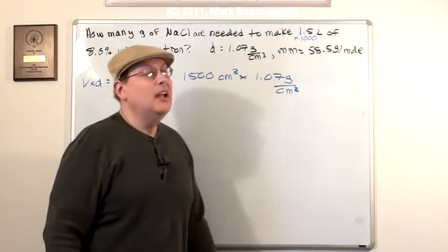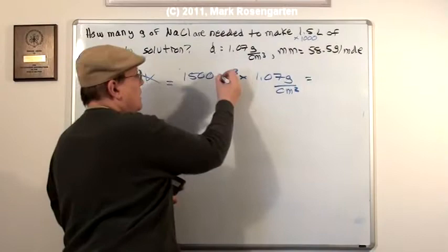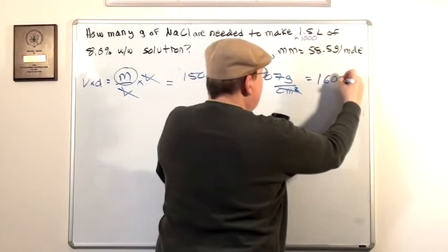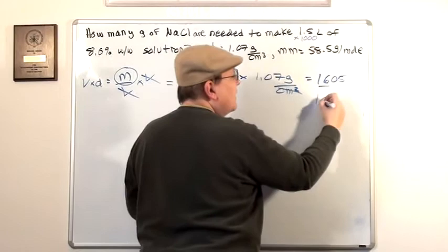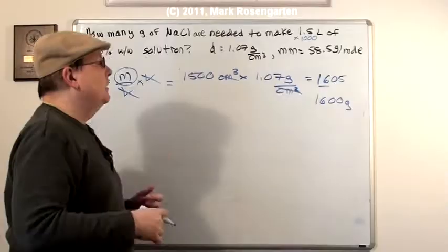The cubic centimeters cancel out, and we come up with 1,605. Well, that's two sig figs and three sig figs. We're going to knock it down to two sig figs. 1,600 grams. That is how much solution we have total. That includes the water, and it includes the salt.